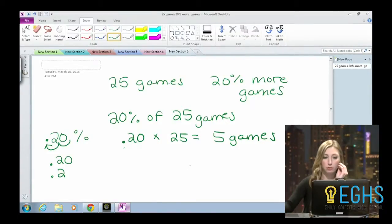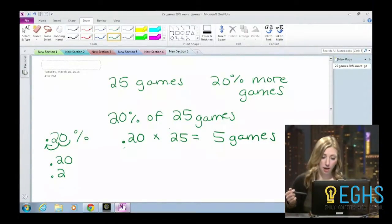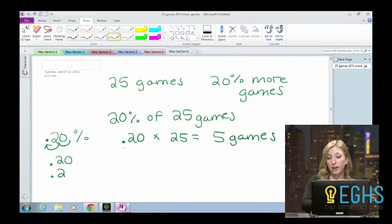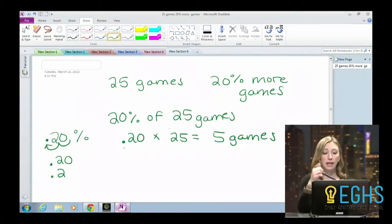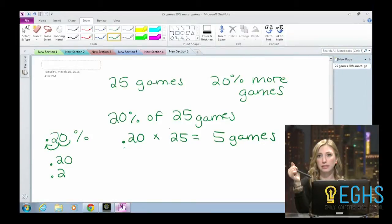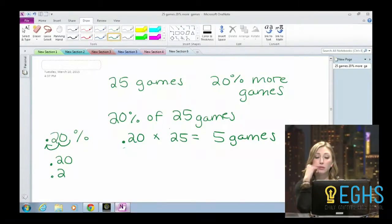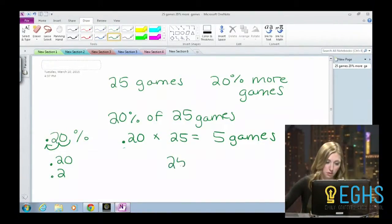So then how would you find out that last part of it, how many more games? So what we did is we took that decimal. We wanted to find out what 20% of 25 was. So we multiplied to find out that five games is 20% of 25 games. And we know that he played 20% more games this year than he did last year. So how would I find out how many games he did this year? So he played 25 games, 20% more. And that 20% was five games.